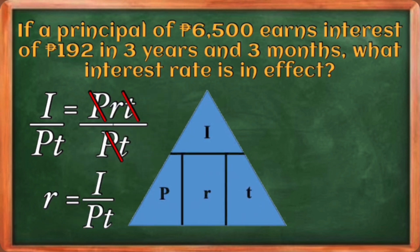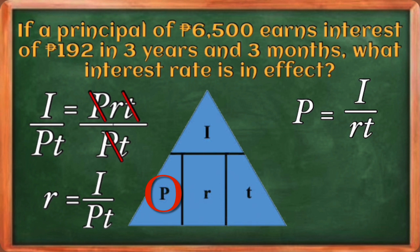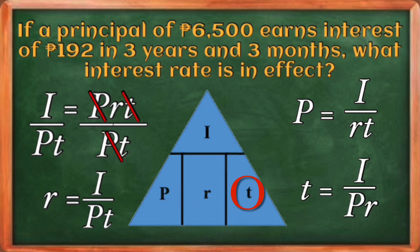To remember these formulas easily, you can use a triangle where I = P × R × T. To solve for P, divide I by (R × T), giving P = I / (RT). To solve for time T, divide I by (P × R), giving T = I / (PR).